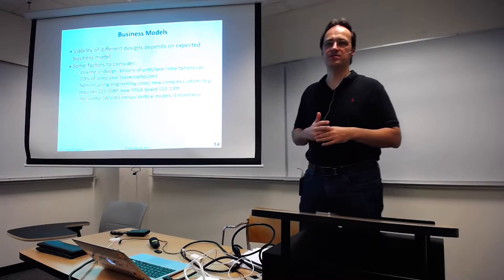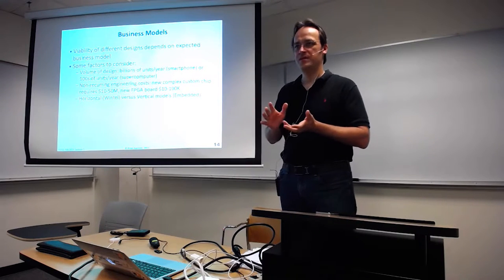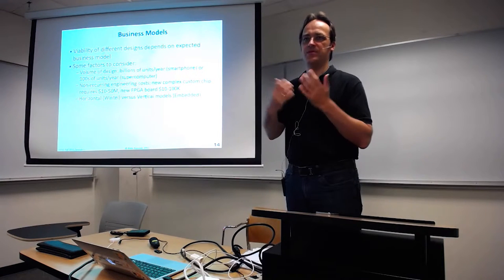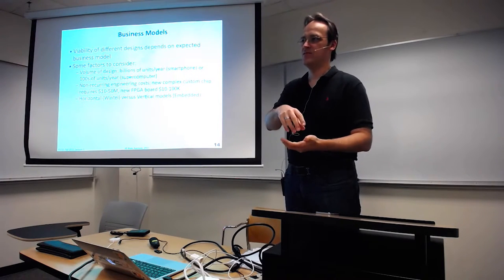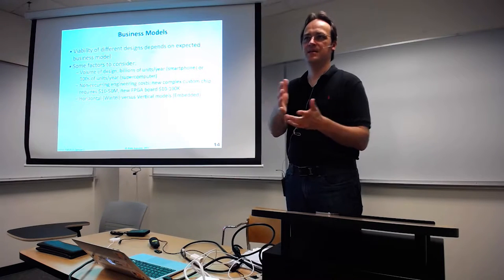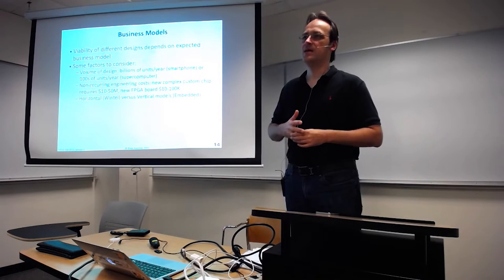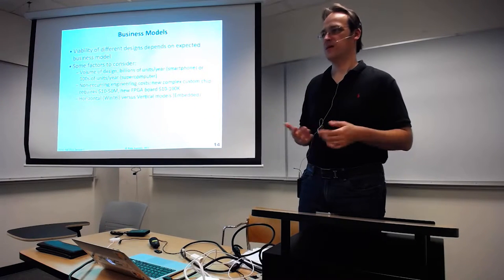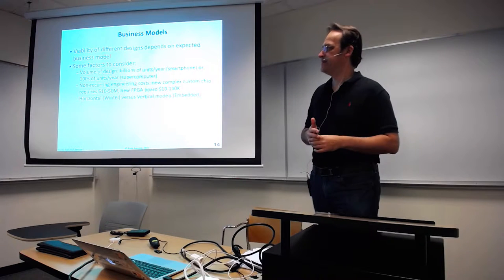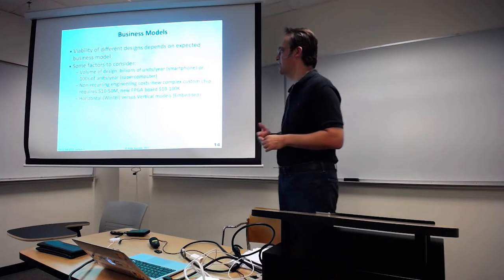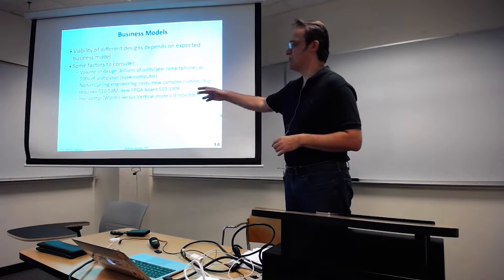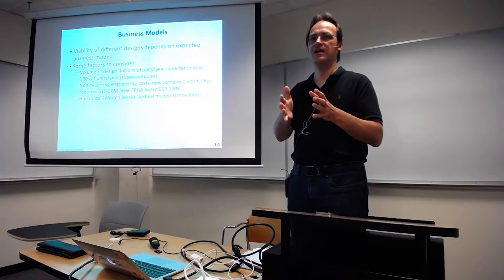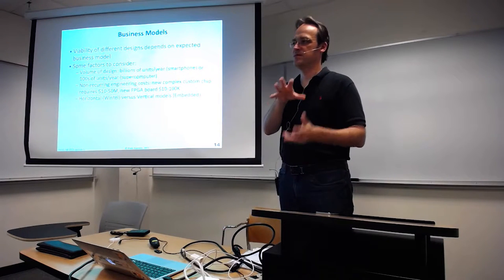Increasingly we're seeing vertical models where one company controls the whole stack. For example Apple: they design the chips, write the software that runs on top. If there's a bug in the core, you can work around it in software and nobody knows about it — a more relaxed environment in some ways. On the other hand, in the horizontal market you can mass-produce things used by many people. In the vertical market, you have to make sure that vertical is big enough to justify doing the custom thing.